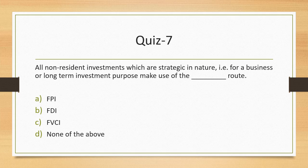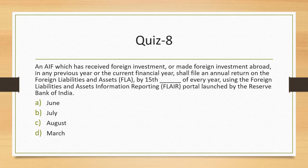Question 7: All resident investments that are strategic in nature for a business or long-term investment purpose make use of which route? They do not use the FPI route or venture capital investment route — they actually make use of the FDI route. FDI is more associated with strategic or long-term investments made in India.